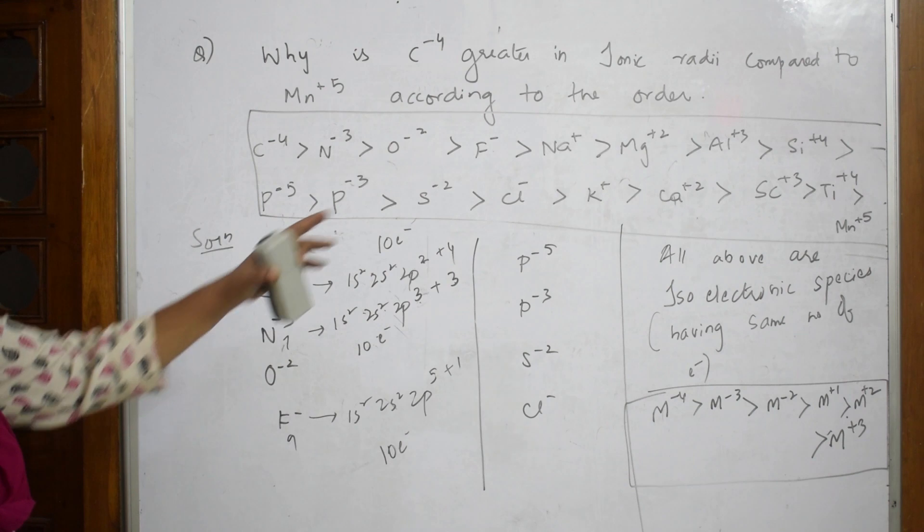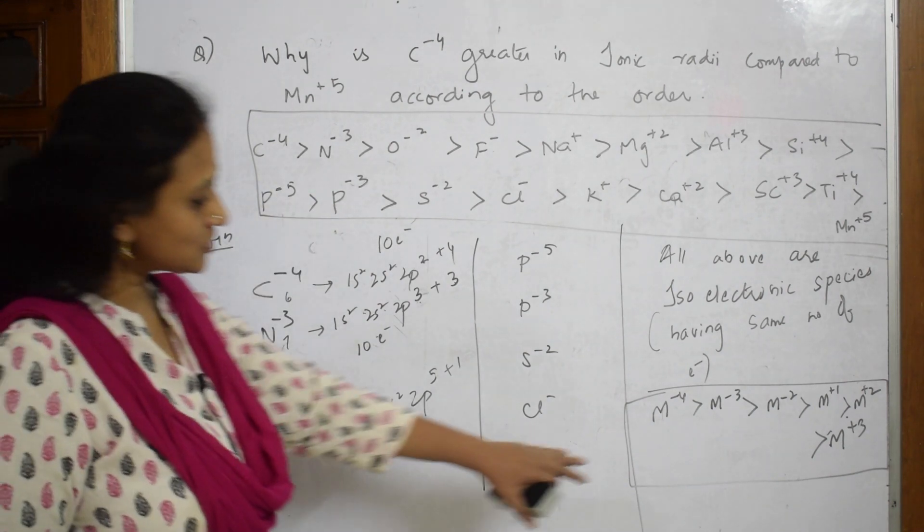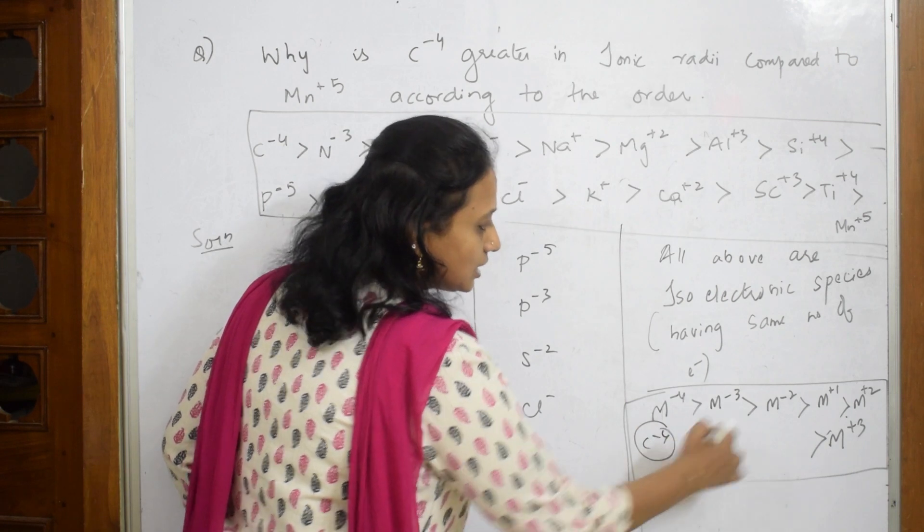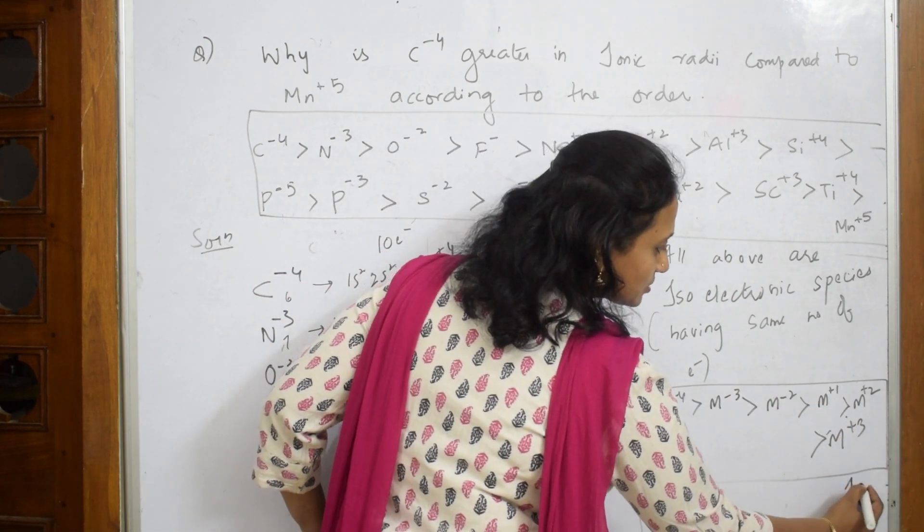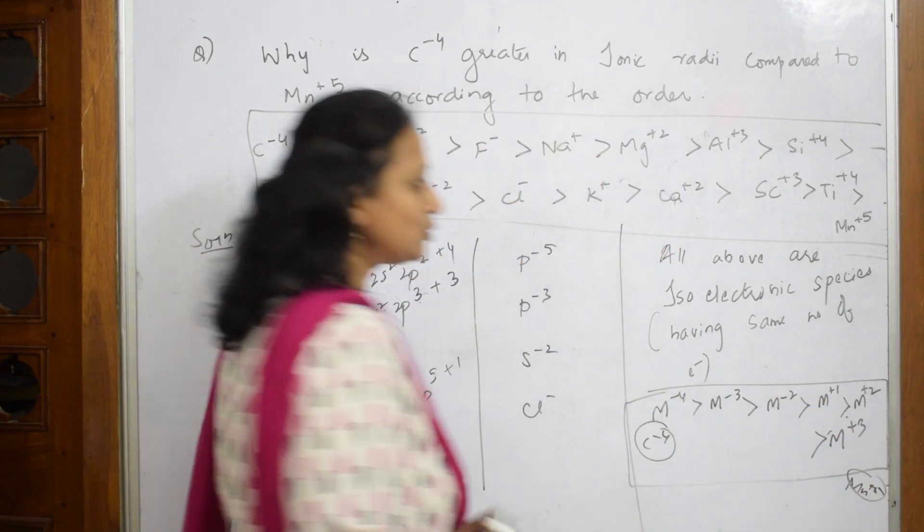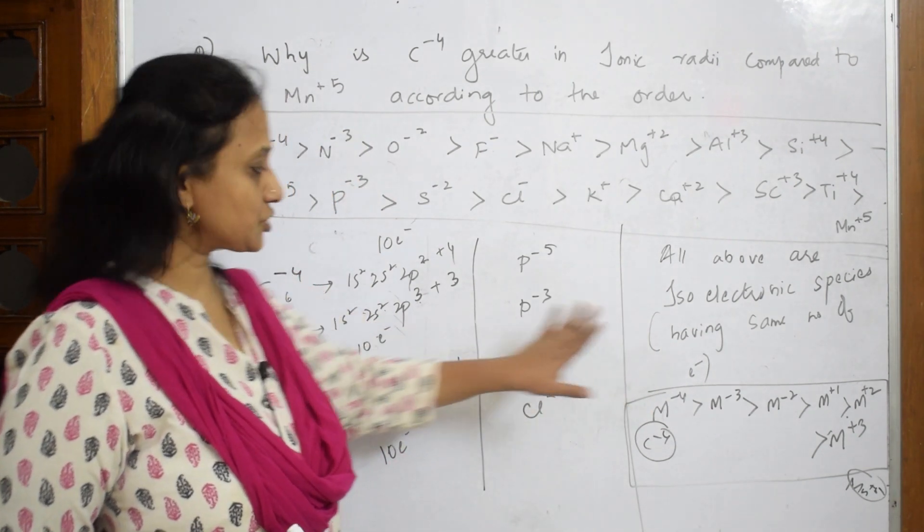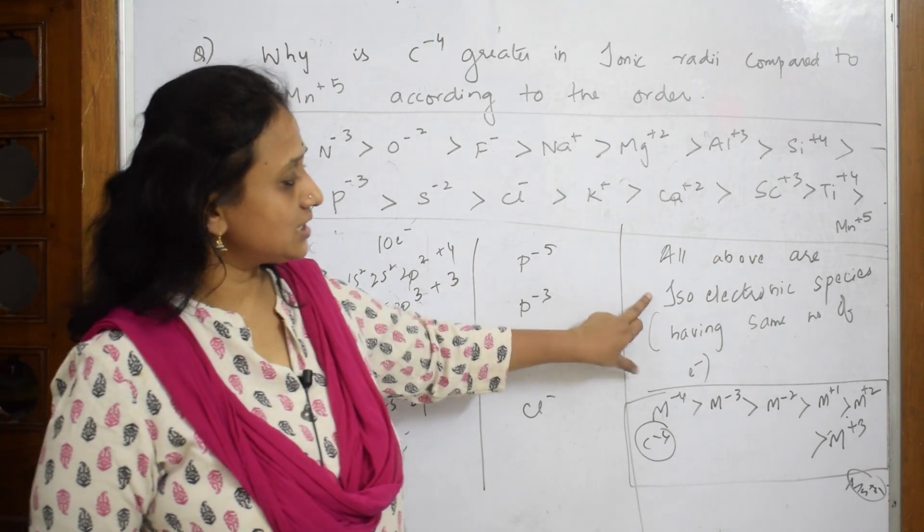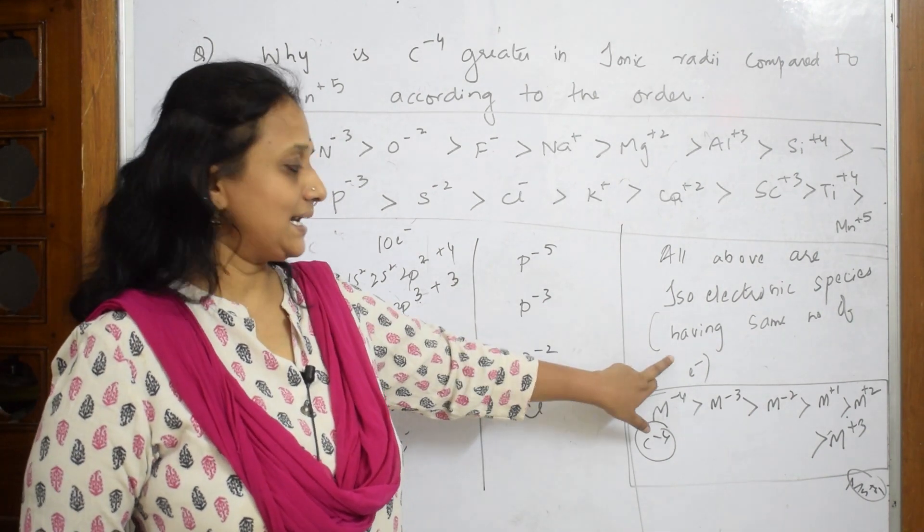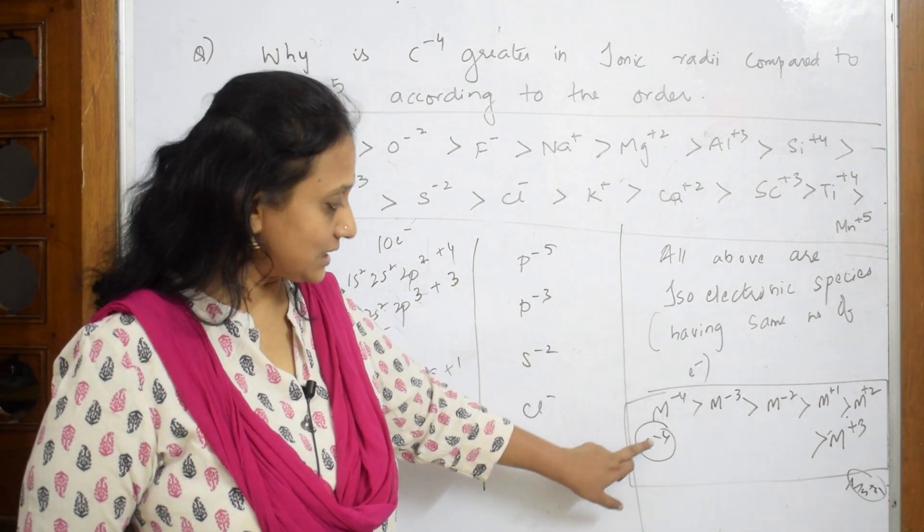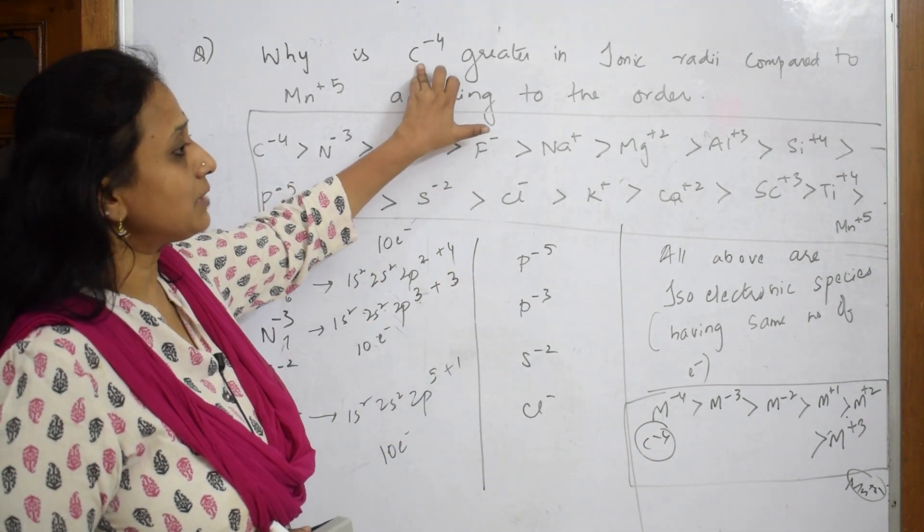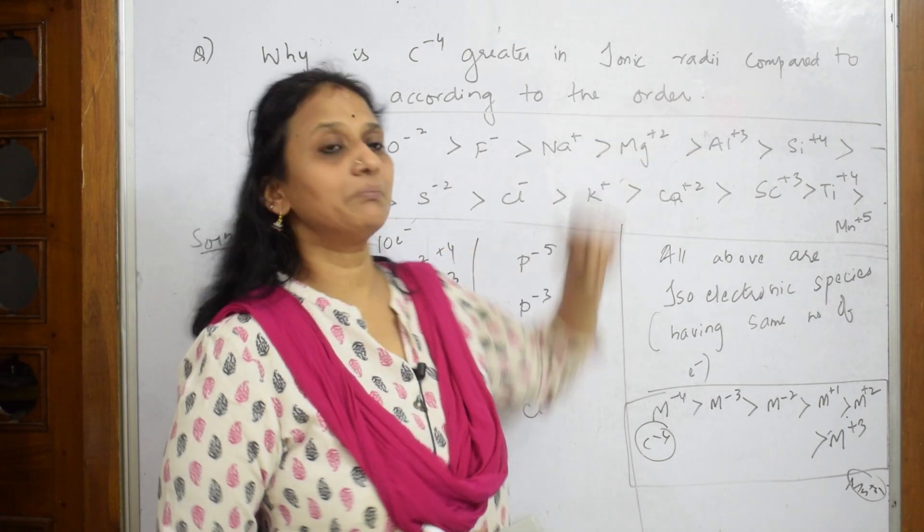Since this is the order, M^-4 is C^-4, the last one will be Mn^+5. So just conclude this is your answer. First you need to write like this, show them the number of electrons, then say there are isoelectronic species having same number of electrons. Finally write the order and conclude your answer saying that C^-4 is greater than Mn^+5.